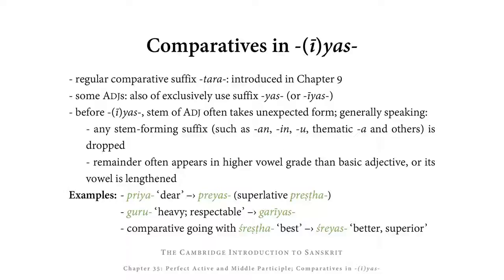From GURU, meaning 'heavy' or 'respectable,' we get the comparative GARIYAS. Going with the superlative SHREESHTA, meaning 'best,' we get the comparative SHREYAS, meaning 'better' or 'superior.' It may be difficult to recognise GARIYAS on the basis of GURU — this is the same for most people — and therefore you will find all of these comparatives, PREYAS, GARIYAS, SHREYAS, and so on, listed in any vocabulary list or dictionary.